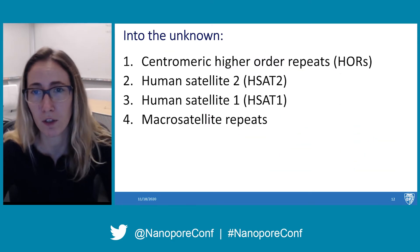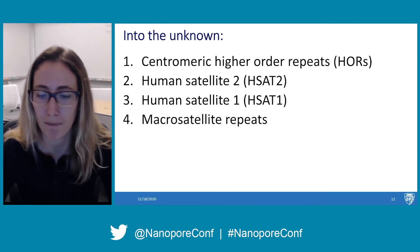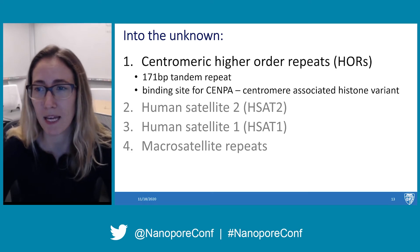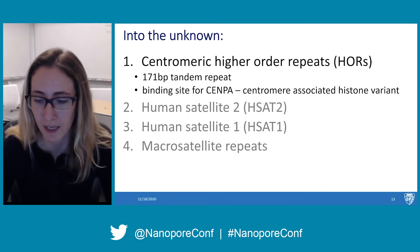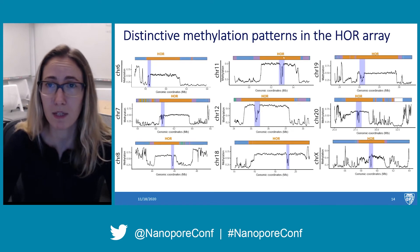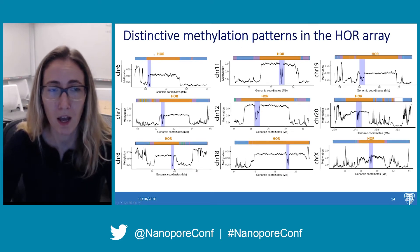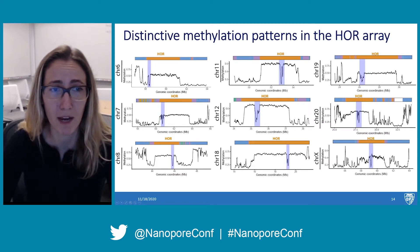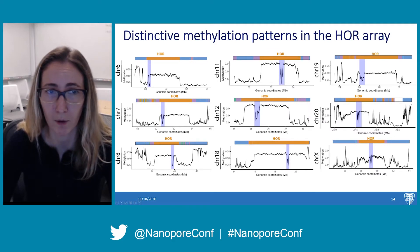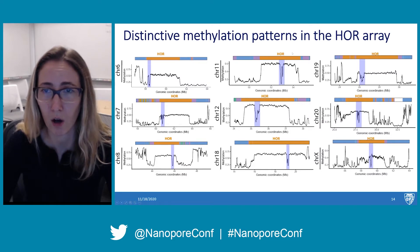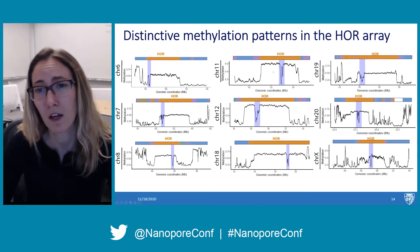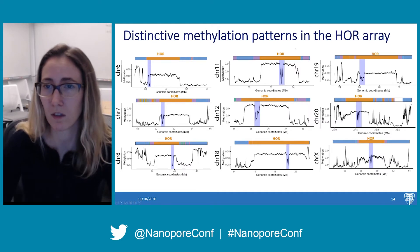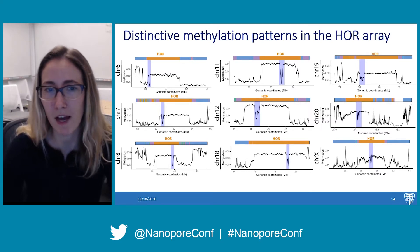We first looked at centromeric higher order repeats, human satellites 1 and 2, and macrosatellite repeats. Centromeric higher order repeats are 171 base pair tandem repeats and are binding sites for the CENPA histone — an H3 histone variant that is centromere-associated and aids in proper chromosome segregation. We see distinctive methylation patterns within the higher order repeat array: throughout most of the higher order repeat there is consistent hypermethylation, but in every centromere we surveyed, we also see a consistent hypomethylated region. These are epigenetic events that have never previously been probed before.